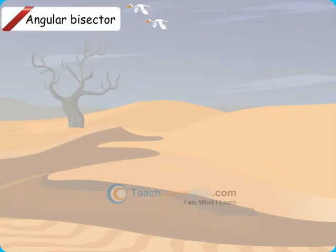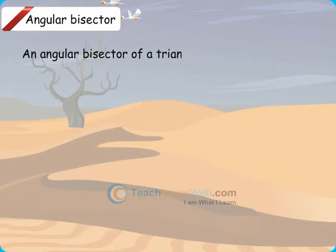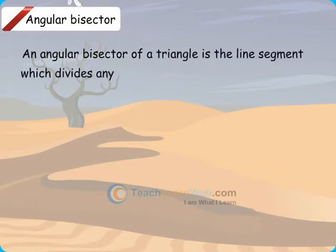Angular Bisector: An angular bisector of a triangle is the line segment which divides any angle into two equal halves.